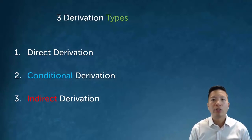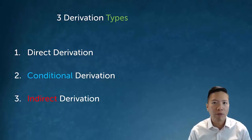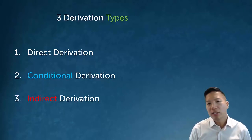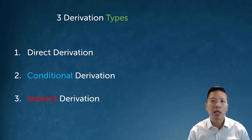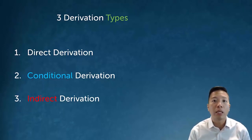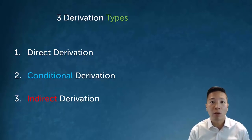Once you start getting used to derivations, you might ask: what is it that you're actually doing? Remember, what we're trying to show is that an argument is valid — we're trying to show that from the truth of the premises, the conclusion actually follows. That's why we can assume the premises are true and use them whenever we want. The type of derivation we're doing is called a direct derivation, and it basically says I was able to show that from the truth of my premises the conclusion follows immediately and directly.